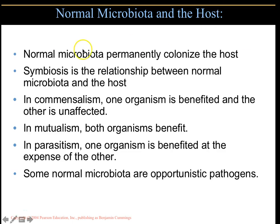Symbiosis means you're in a relationship with something, and there are three types. Mutualism is when both organisms benefit — for example, E. coli in the lower GI tract loves feces, so you provide food for it, and in return it provides protection against food-poisoning organisms. Commensalism means one organism is benefited but the other is neither benefited nor harmed.